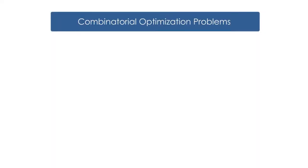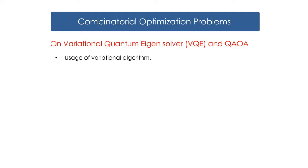First, let us learn on combinatorial optimization problems on variational quantum eigensolver and QAOA. Combinatorial optimization problem is one of the usage of variational algorithm. It is a problem to find the best solution by solving a minimized optimization problem.